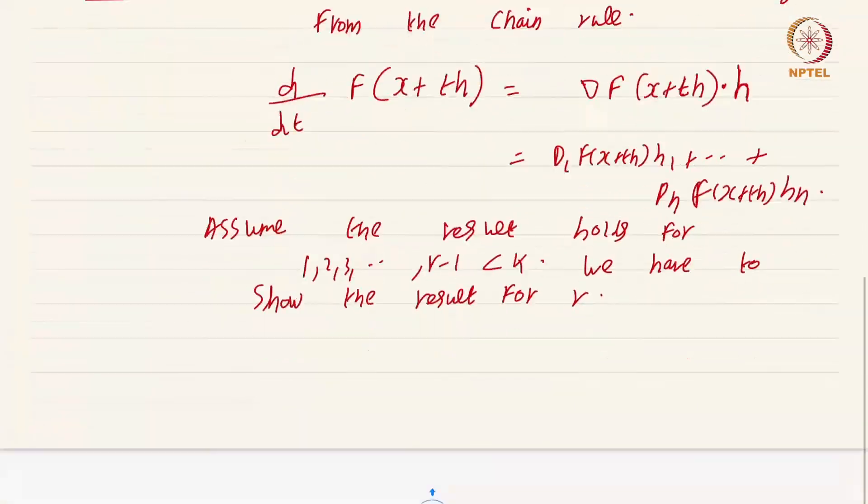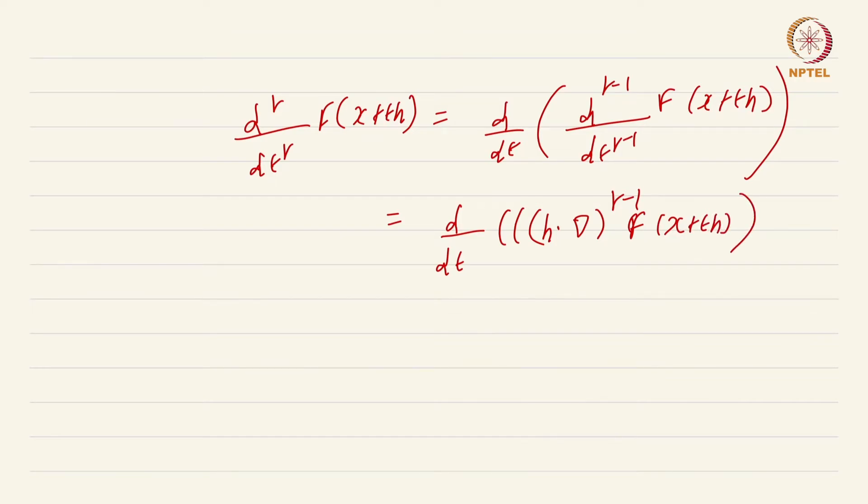We have to compute d^r by dt^r f of x plus th which we know is nothing but d by dt of d^(r-1) by dt^(r-1) f of x plus th, which we know by induction hypothesis is nothing but d by dt of h dot grad power r minus 1 f of x plus th. This is just by the definition of h dot grad and the fact that the result holds for the one variable case, this is just h dot grad power r f of x plus th.